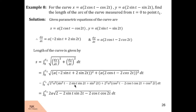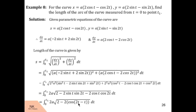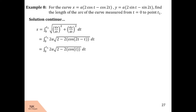We are left with −2sin t sin 2t and −2cos t cos 2t. Taking out the common factor of −2, inside the bracket we have sin t sin 2t + cos t cos 2t, which matches the identity cos(a − b) = cos a cos b + sin a sin b. So we get cos(2t − t) = cos t. Taking out the common 2, we are left with 1 − cos t, which equals 2sin²(t/2).